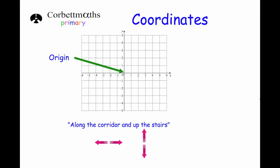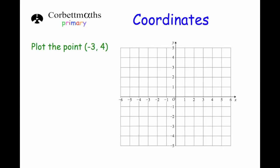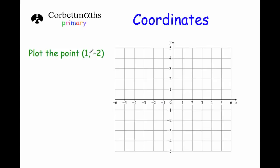Let's look at some questions. First, plot the point (5, 1). Go to the origin — 5 is positive so go right to 5, and 1 is positive so go up one. That's the point (5, 1). Next, plot the point (-3, 4). Go to the origin — minus 3 means three along the corridor to the left, to minus 3 — and then four means go up four. So that's the point (-3, 4).